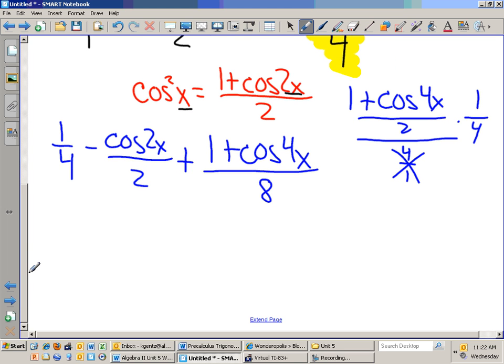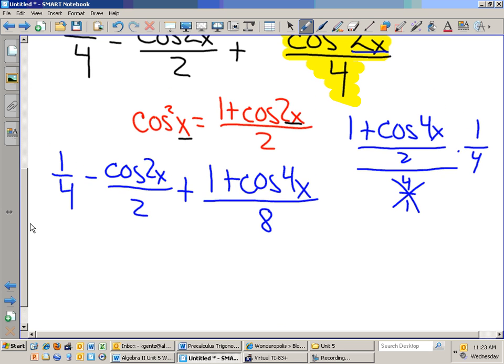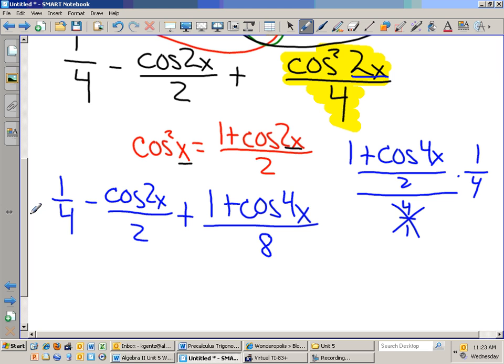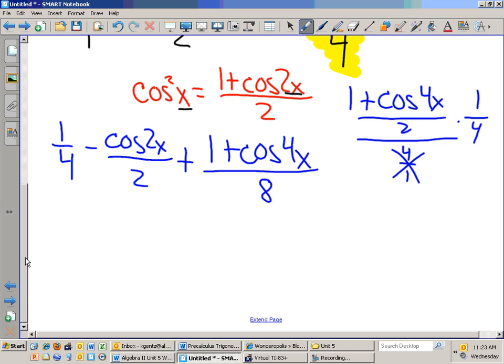Right, so this is going to be 1 eighth, right? Do you see how I got the 4x? And so this cosine squared of 2x is that piece right there, and I'm dividing it by 4 over 1. So I multiply by 1 over 4 to get my 8. Now, I can rewrite this 1 over 4 minus cosine of 2x over 2 plus 1 over 8 plus cosine of 4x over 8.